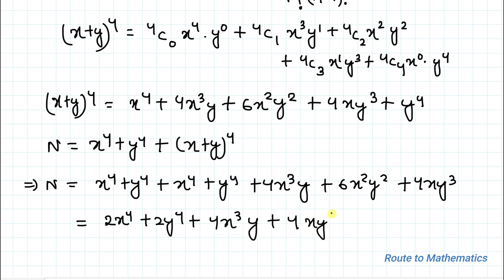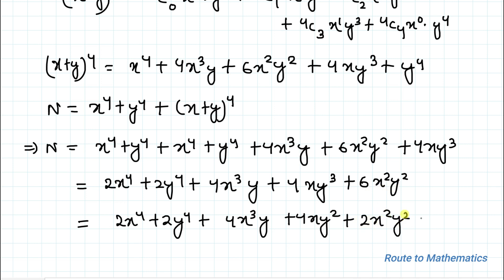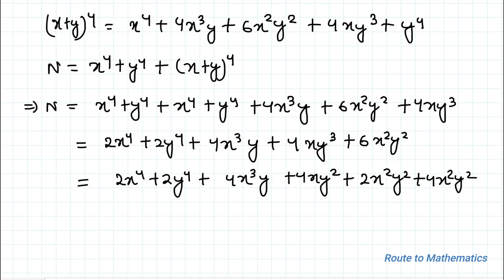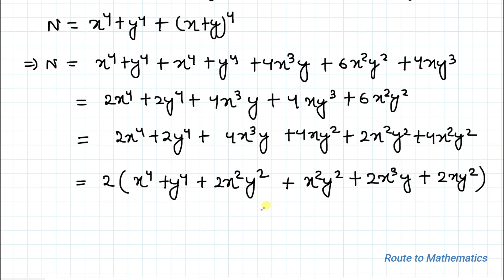We can write 6x²y² as 2x²y² + 4x²y². Taking 2 as a common factor from all terms, we get: N = 2 × (x^4 + y^4 + 2x²y² + x²y² + 2x³y + 2xy³). We know the algebraic identity (a + b)² = a² + b² + 2ab.